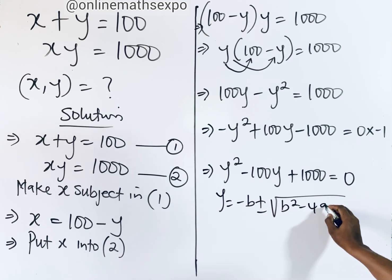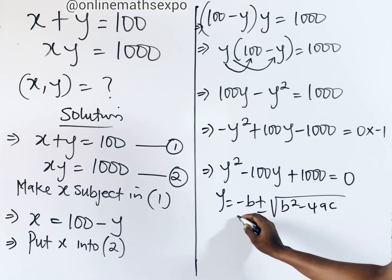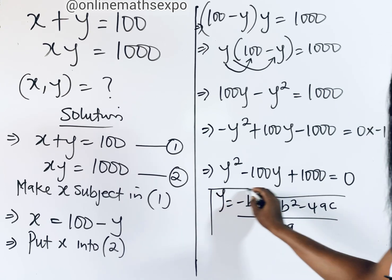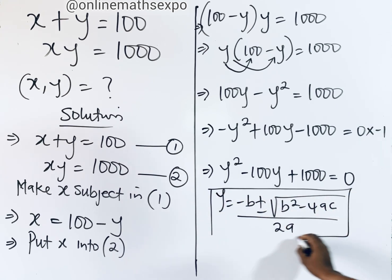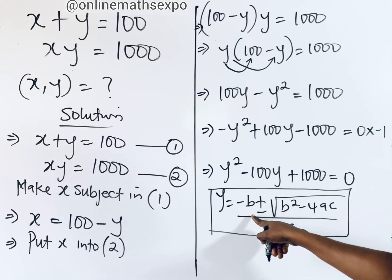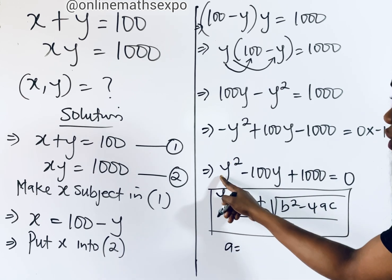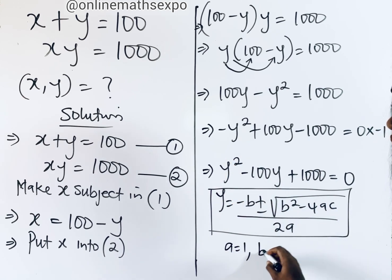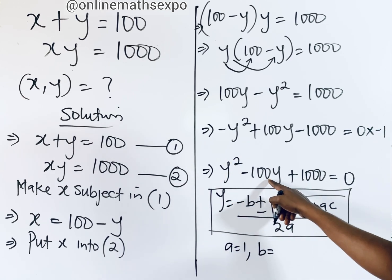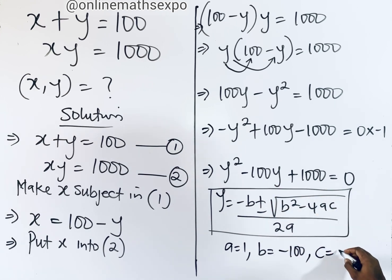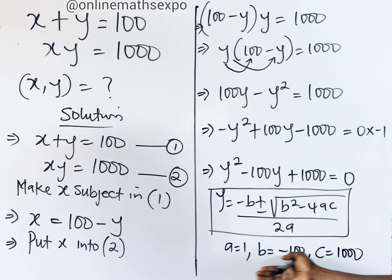In our equation y squared minus 100y plus 1000 equals zero, we identify the coefficients: a is the coefficient of y squared, which is 1; b is the coefficient of y, which is negative 100; and c is the constant, which is 1000.